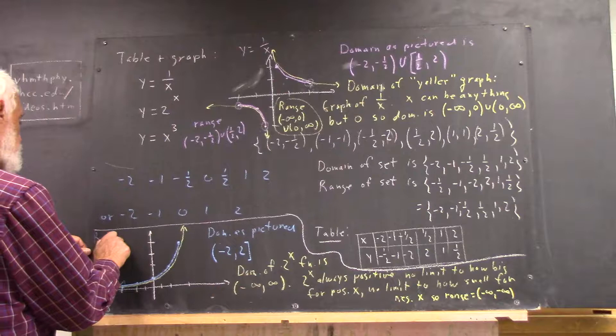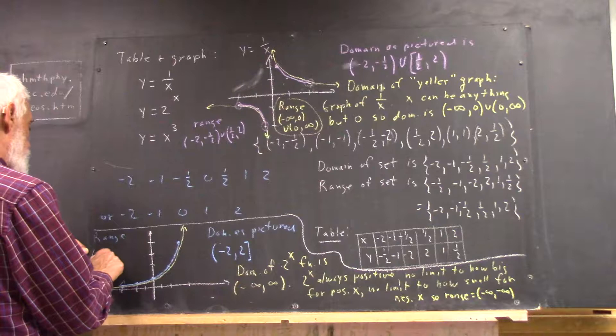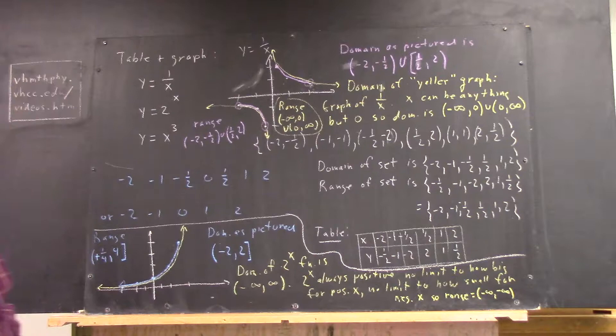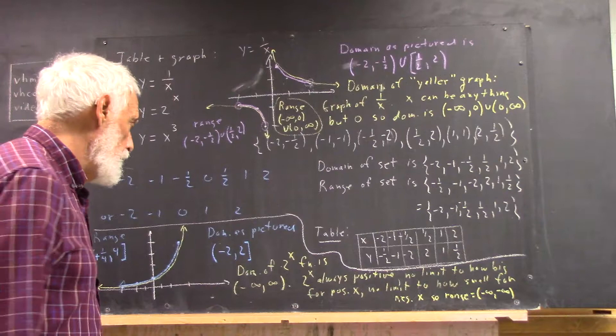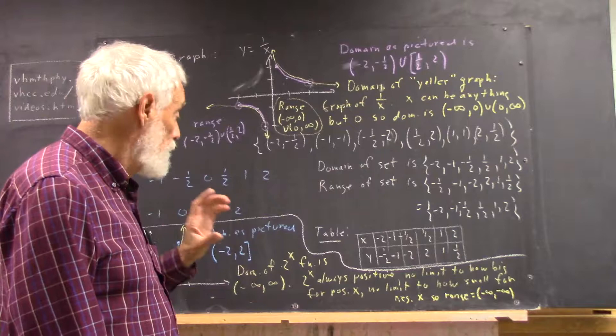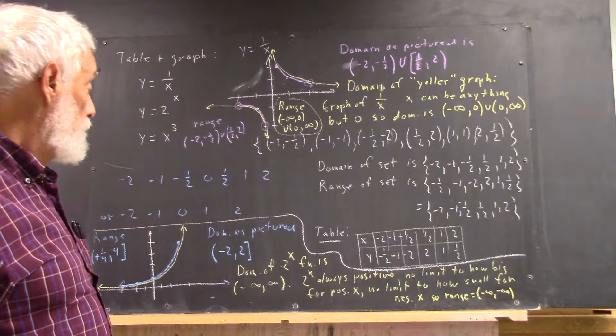The range of the blue graph is from 1 fourth to 4, not including the 1 fourth which occurs here, but including the 4 which occurs here. And then of the whole 2 to the x function, if we do the entire thing, the domain is unrestricted. There's no number that you can't evaluate for 2 to the x. There's no number, no x, plugged into the expression 2 to the x that doesn't give you a result. So the domain is all real numbers from negative infinity to infinity.